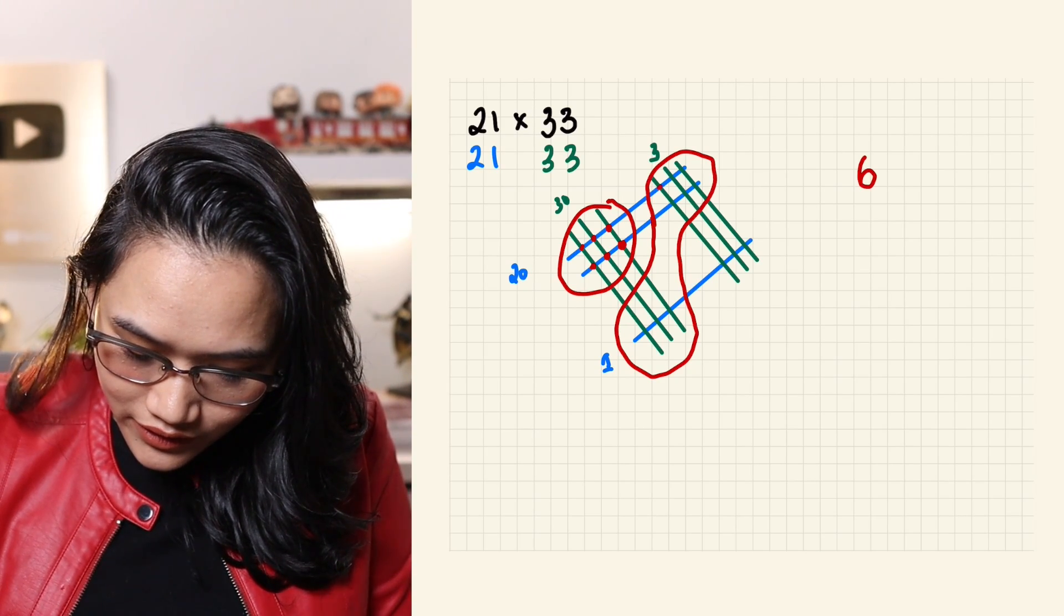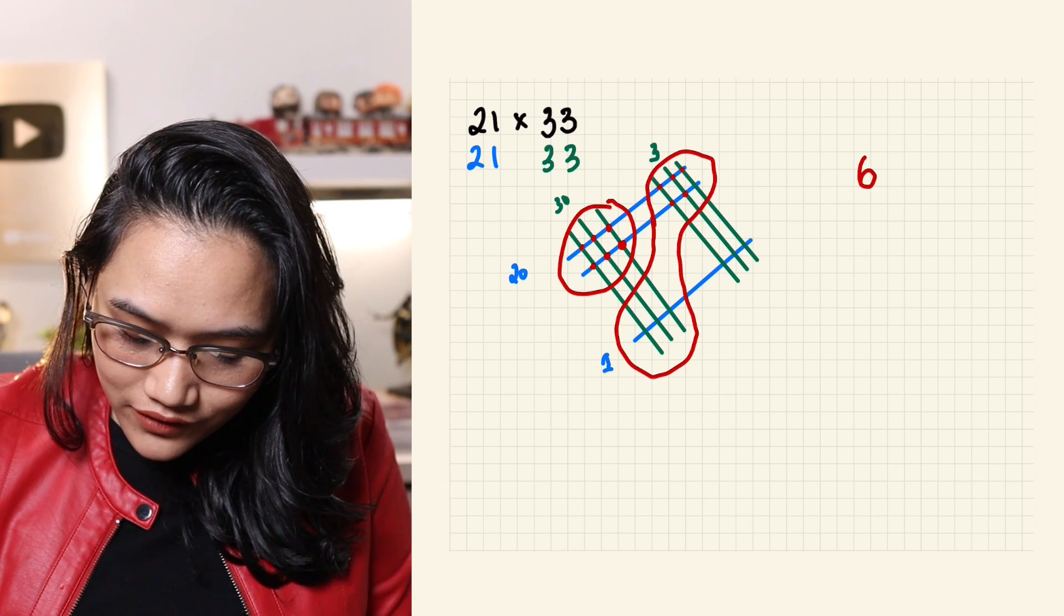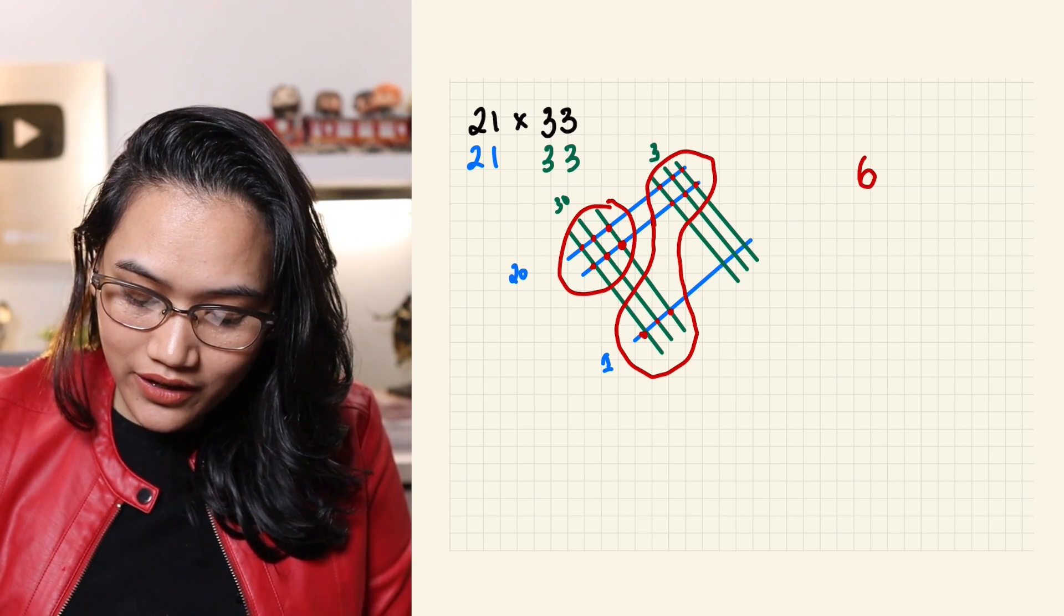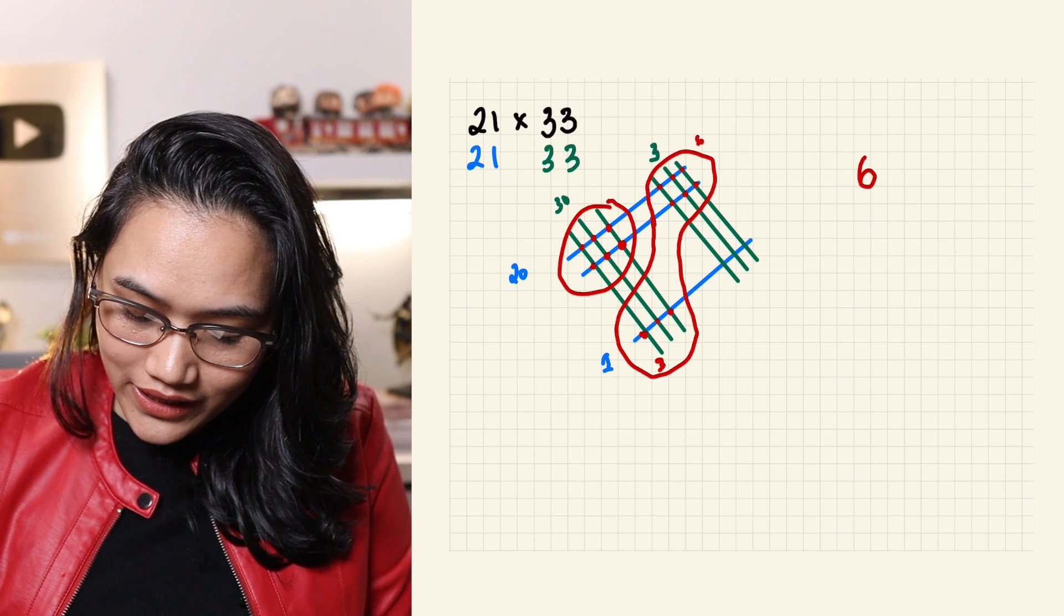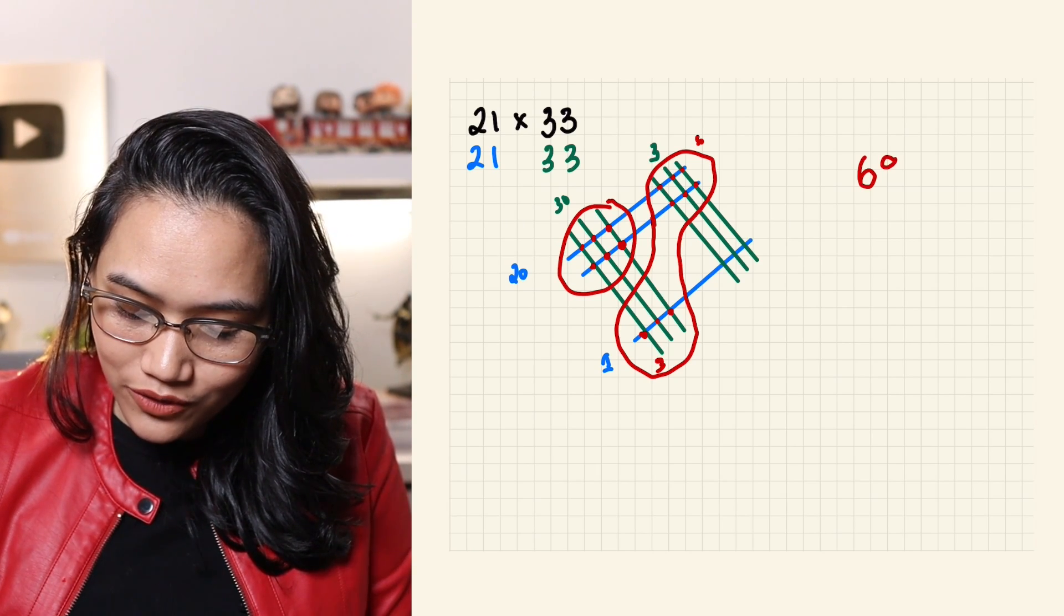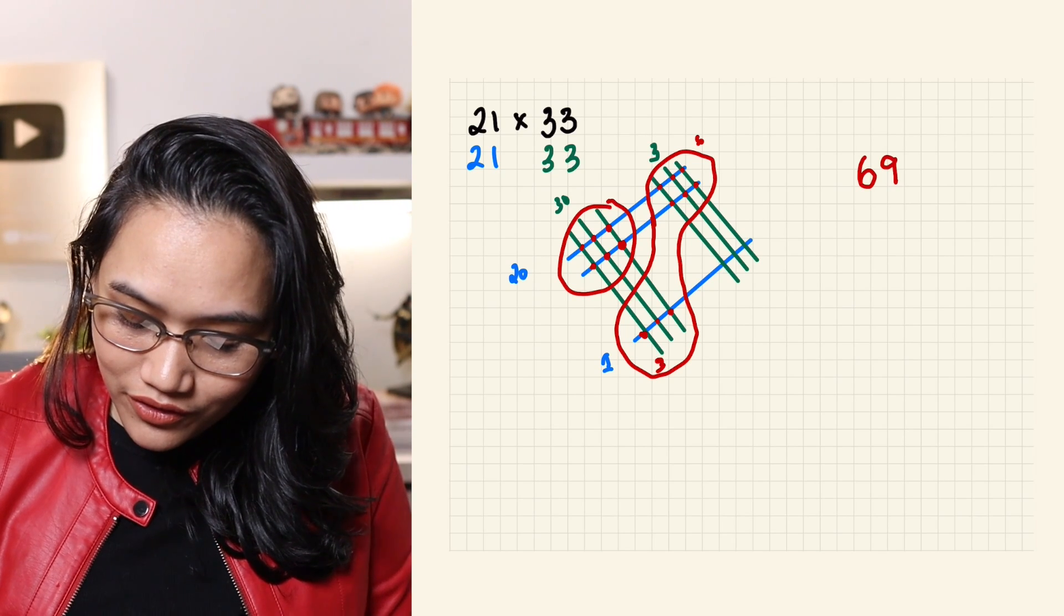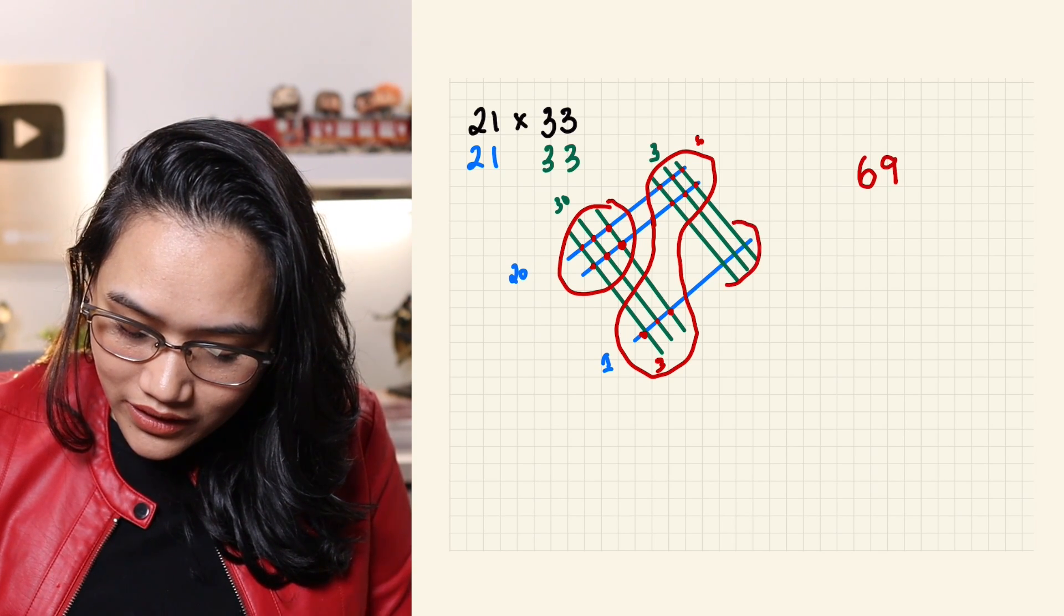So, here you have 1, 2, 3, 4, 5, 6. Six plus 1, 2, 3. So, 6 plus 3 is 9. That is going to be the second digit of our number. Now, the third part would be right here.